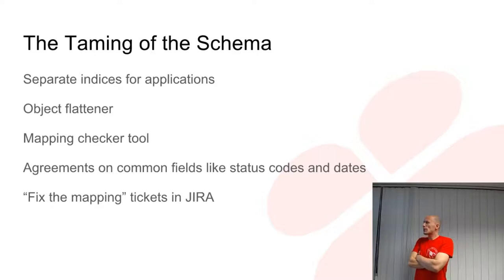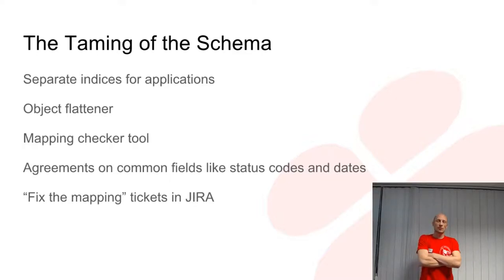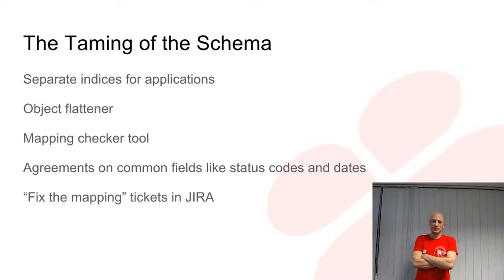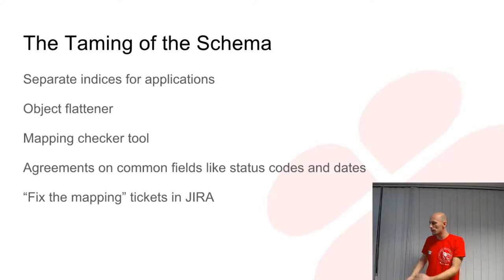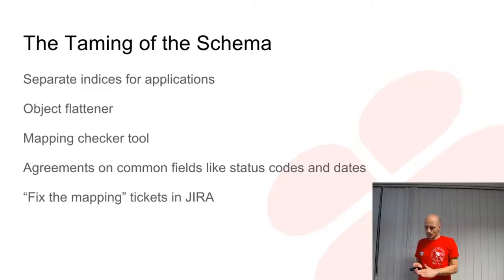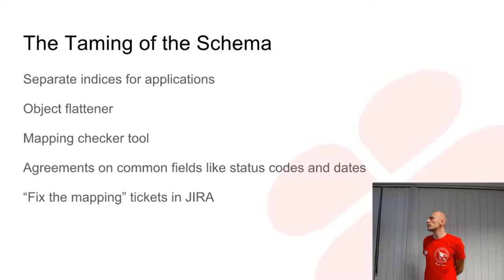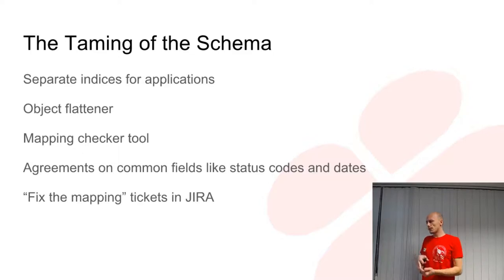We also used softer approaches like getting people together and agreeing on what types common fields should have. And a harder approach where you just make Jira tickets: go fix the mapping, go fix that, this is wrong. We also introduced a tool that can process your logs before they are sent into Elasticsearch, so you could test while developing. This tool detected potential mapping conflicts and listed them out.